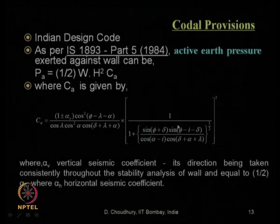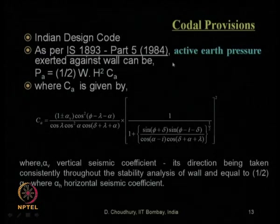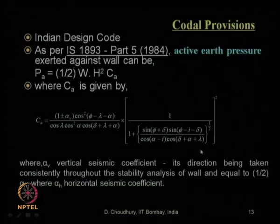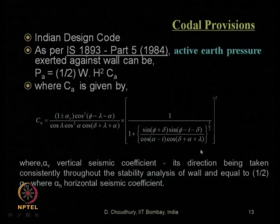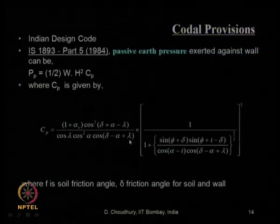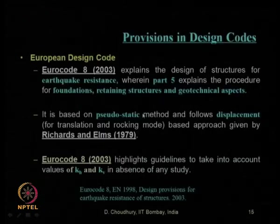The IS code gives the equation for the active earth pressure coefficient under seismic condition using the Mononobe-Okabe approach. This formula is the Mononobe-Okabe seismic active earth pressure coefficient. Similarly, the seismic passive earth pressure coefficient using the pseudo-static Mononobe-Okabe approach is also given in the IS code.